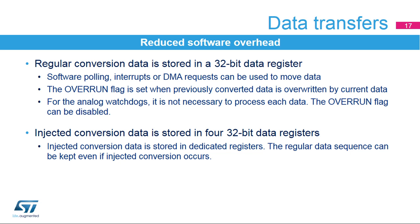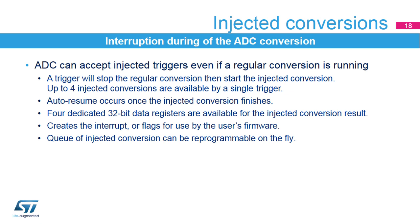For injected channel conversions, four dedicated data registers are available. An injected conversion is used to interrupt the regular conversion and insert up to four channel conversions. Once an injected conversion is finished, the regular conversion sequence can be resumed, and the result is stored in dedicated data registers. Flags and interrupts are available for end of conversion or end of sequence. The injected channel choices can be reprogrammed on the fly — even if a regular or injected conversion is in progress, a different channel can be added to the queue.